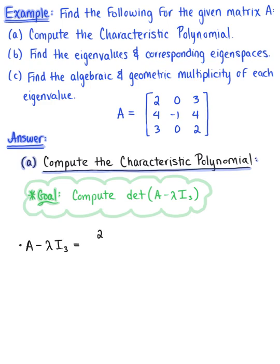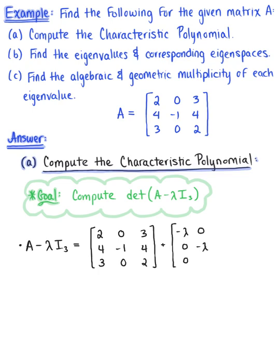We have our matrix A, which is [[2, 4, 3], [0, -1, 0], [3, 4, 2]], and now we add the matrix with negative lambda on the diagonal. Combining those like terms, going across the first row, we are left with [[2-lambda, 4, 3], [0, -1-lambda, 0], [3, 4, 2-lambda]].